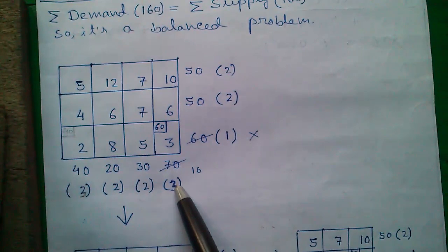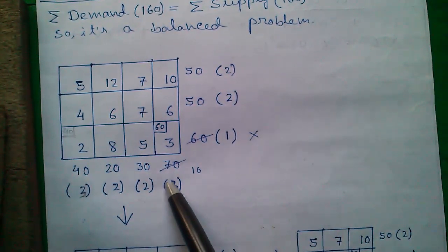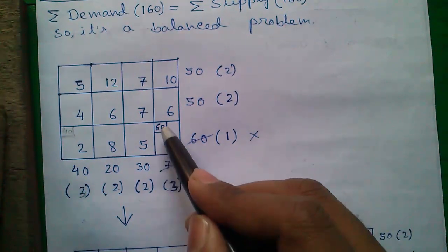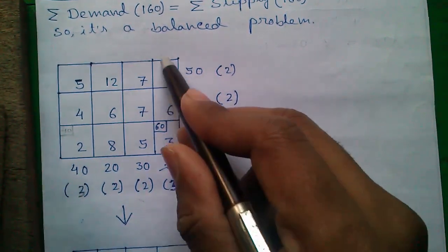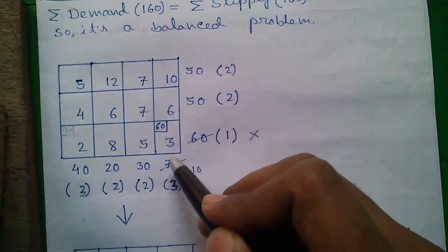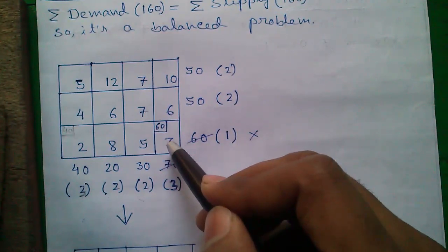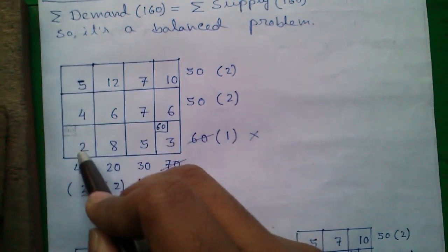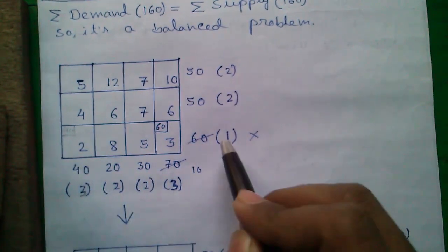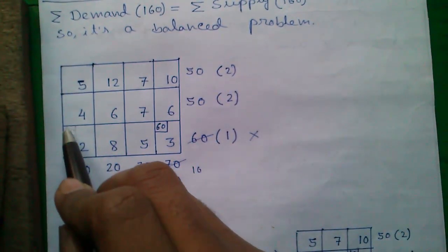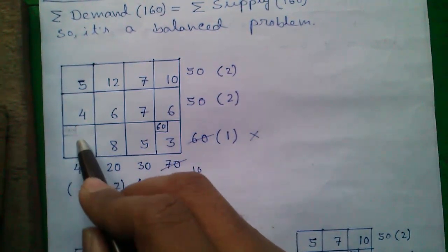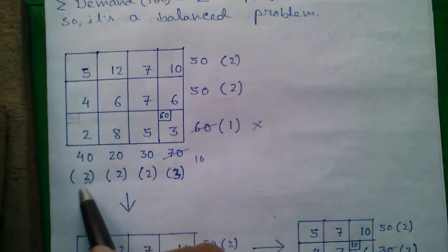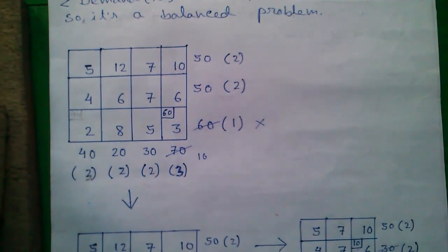Our next special case: if the largest penalty value is tied — say we get 3 in two different rows or columns — where do we start our first allocation? In that case, check the allocation cost. For the first tied column, the smallest number is 3 and we can allocate 60, giving a cost of 60×3 = 180. For the other tied position, the smallest element is 2 and the demand is 40, giving a cost of 40×2 = 80. Since 80 is less than 180, we allocate at the cell with cost 2. Since our objective is to minimize the cost of transportation, we choose the allocation with lower cost.